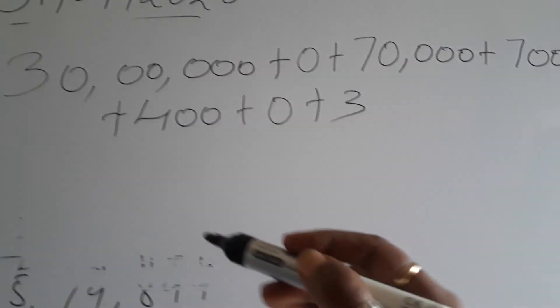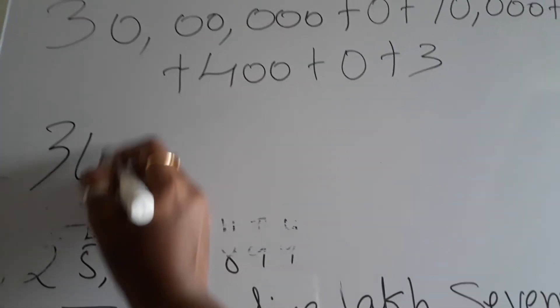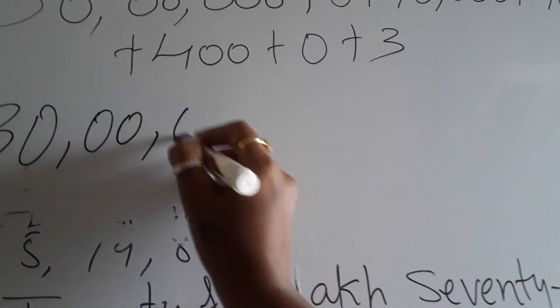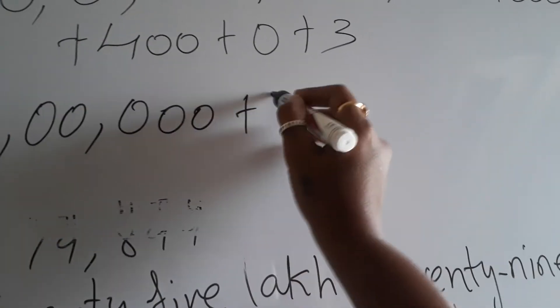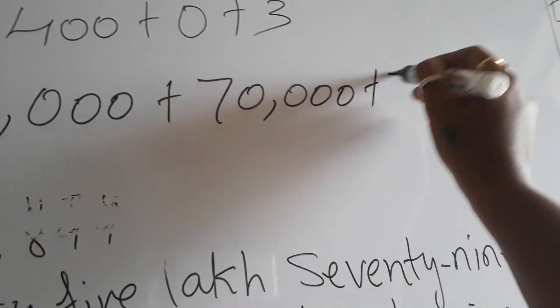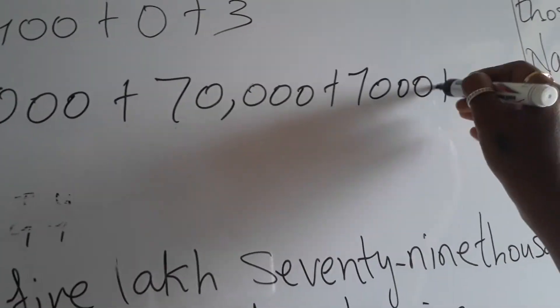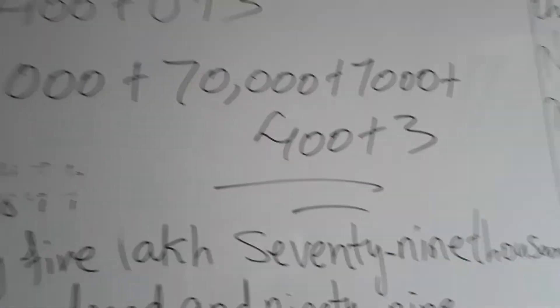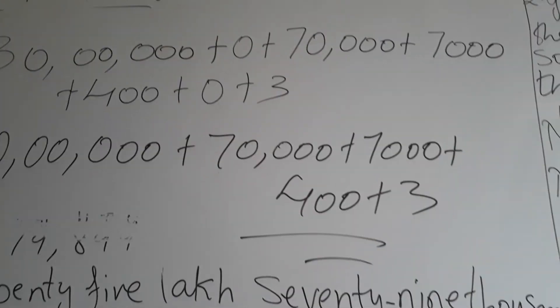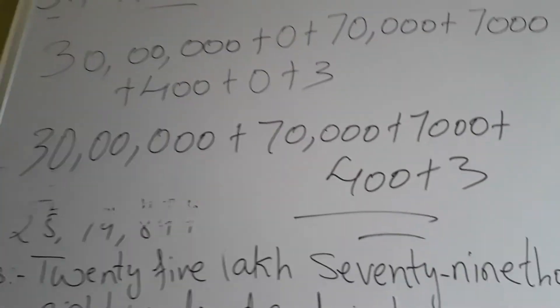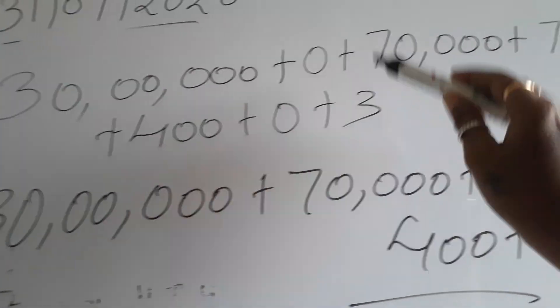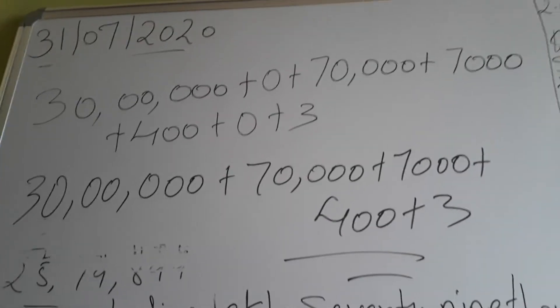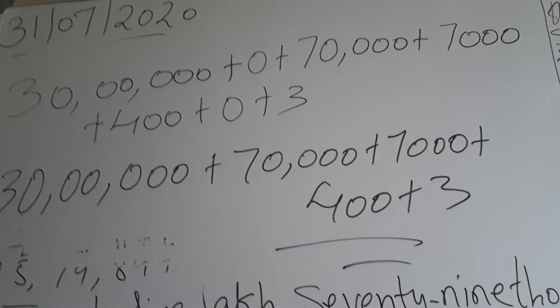You can leave at this point or you can rewrite it as 30 lakh plus 70,000 plus 7,000 plus 400 plus 3. As zero has no value over there, so you can just rewrite this in this form, or even if you leave it at this place it's okay, you will get marks. Hope it's understood, children, how do we expand the numbers. Hope it's very clear how it is expanded.